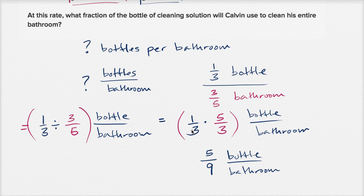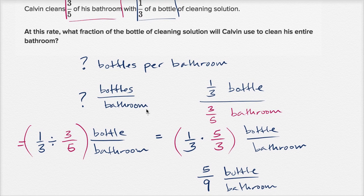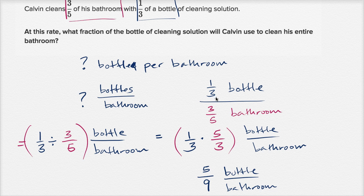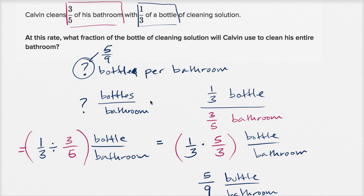So just as a reminder of what we did here — it could seem a little daunting, but we said we want to know what fraction of the bottle cleans his entire bathroom, so we care about bottles per bathroom. It took one-third of a bottle to clean three-fifths of a bathroom, so you divide one-third by three-fifths and you get five-ninths of a bottle per bathroom. So it takes five-ninths of a bottle of cleaning solution to clean his entire bathroom.